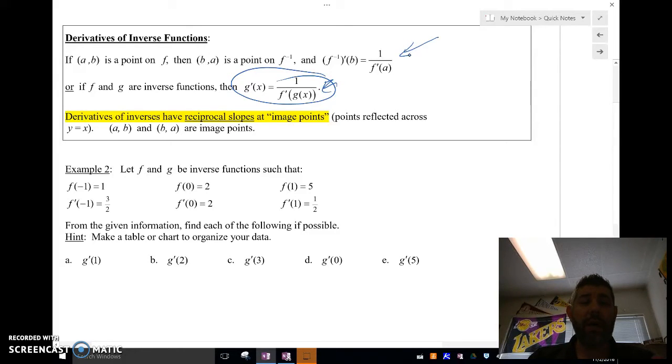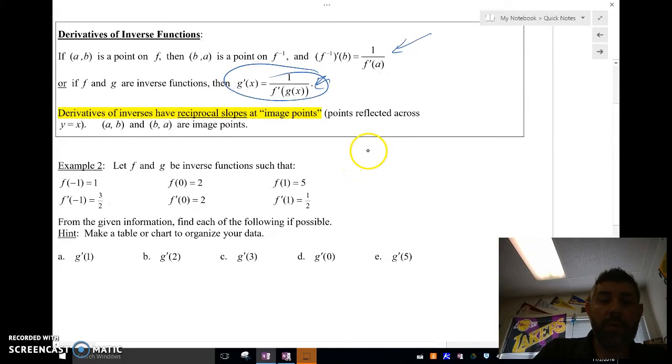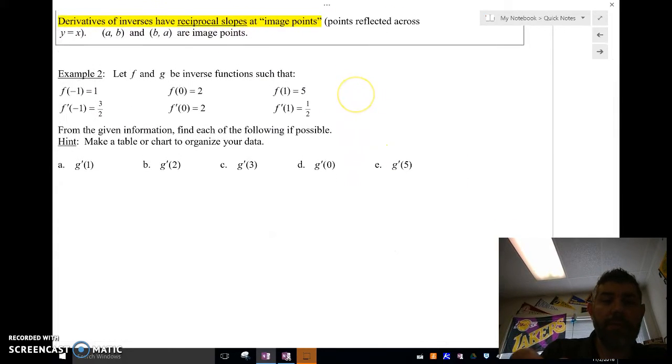So, what I'm going to do here is I'm going to say that f and g are inverses, and I'm going to make a little table here of values, so we can see what the values of f and the points of f are, and then the image points of what f inverse are. So, I'm going to put this up here.